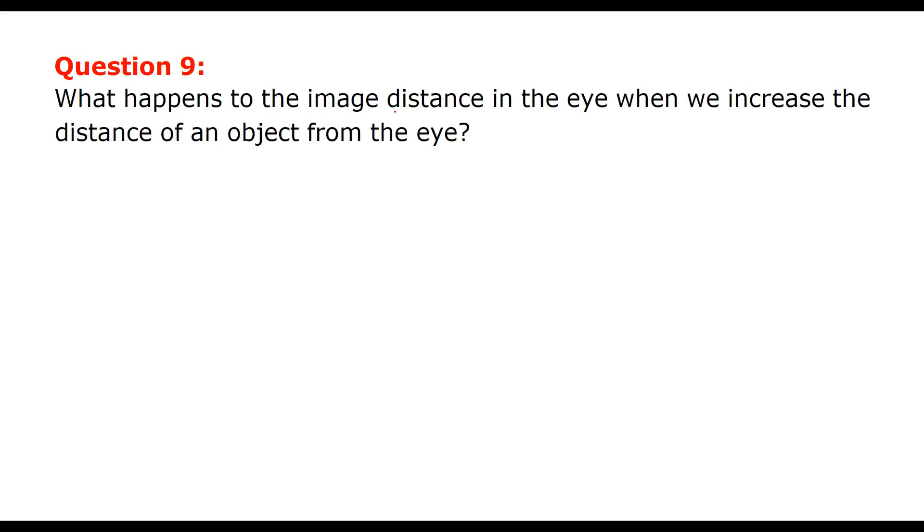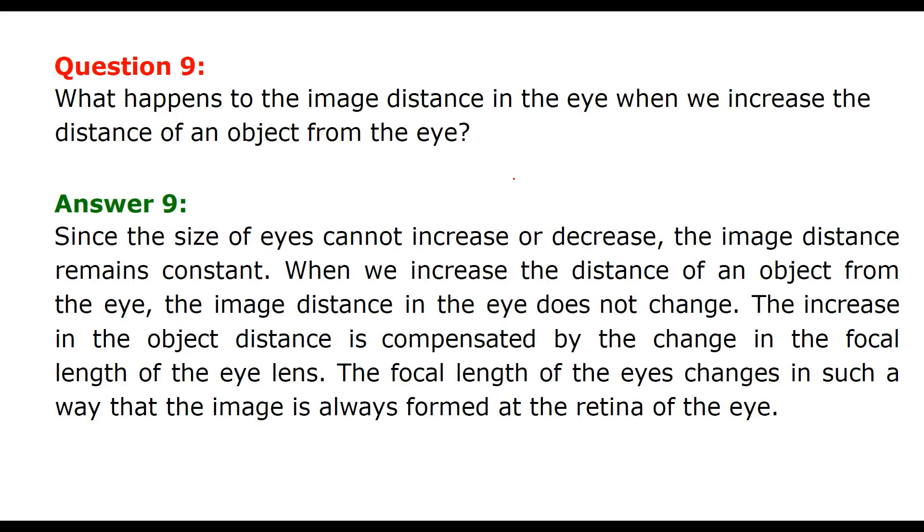What happens to the image distance in the eye when we increase the distance of an object from the eye? The size of the eye is limited. It cannot decrease or increase, and the image distance remains constant. So when we increase the distance of an object from the eye, the image distance in the eye does not change. How to compensate that? The increase in the object distance is compensated by change in the focal length of the eye lens. So the focal length of the eye changes in such a way that image is always formed at the retina of the eye.